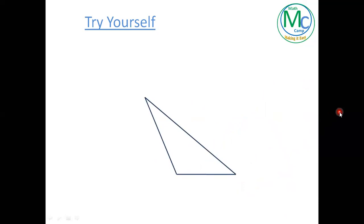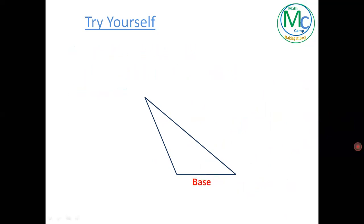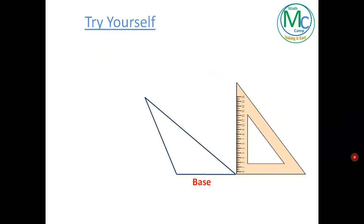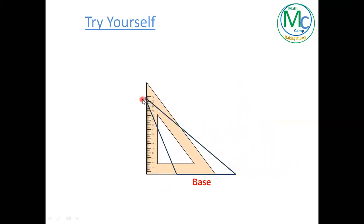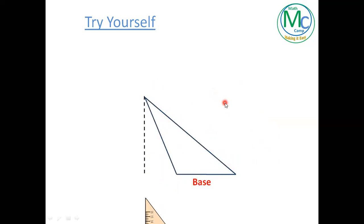Now you have another triangle — try to find out the height for this base. To check your answer: place the set square so its base is over the base of the triangle, keep an eye on the height side when it touches any vertex. It is over here, so the height for this base is this.